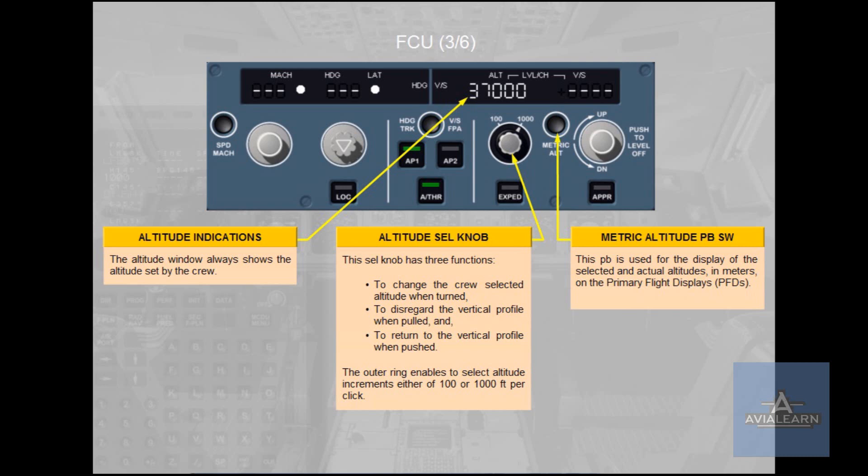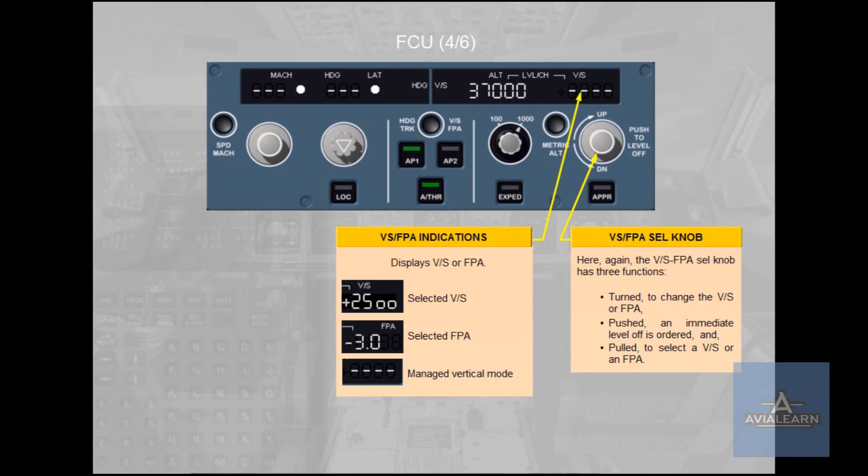The Metric Altitude Push Button Switch is used for the display of the selected and actual altitudes in meters on the primary flight displays. The Vertical Speed and Flight Path Angle Indications display the Vertical Speed or the Flight Path Angle. The first example shows the selected vertical speed, the second shows the selected flight path angle, and the third shows the managed vertical mode.